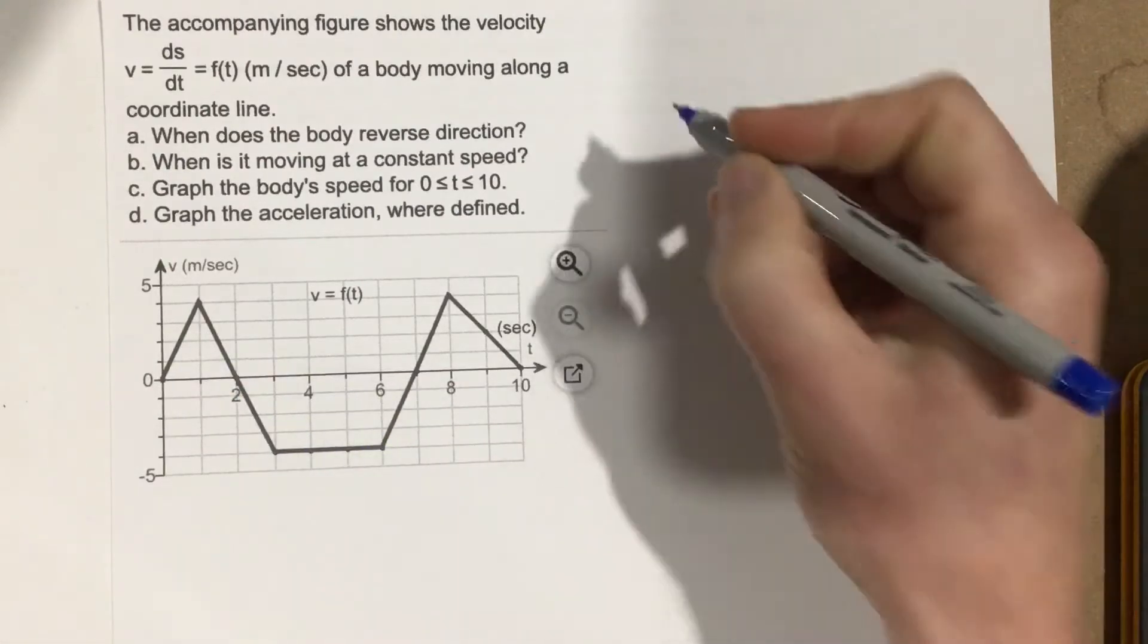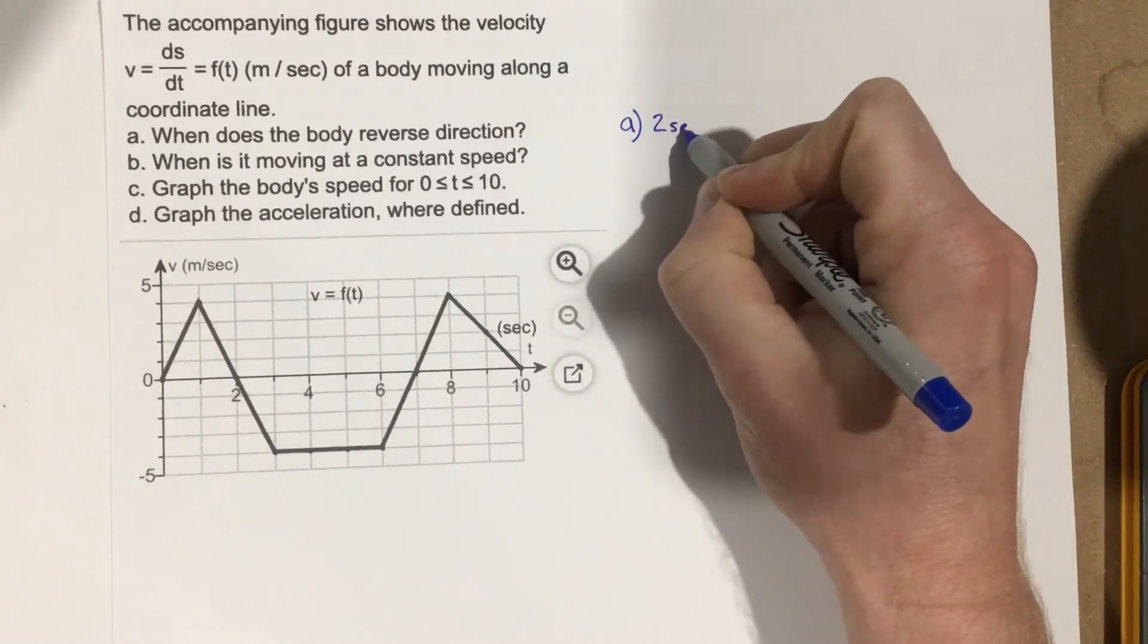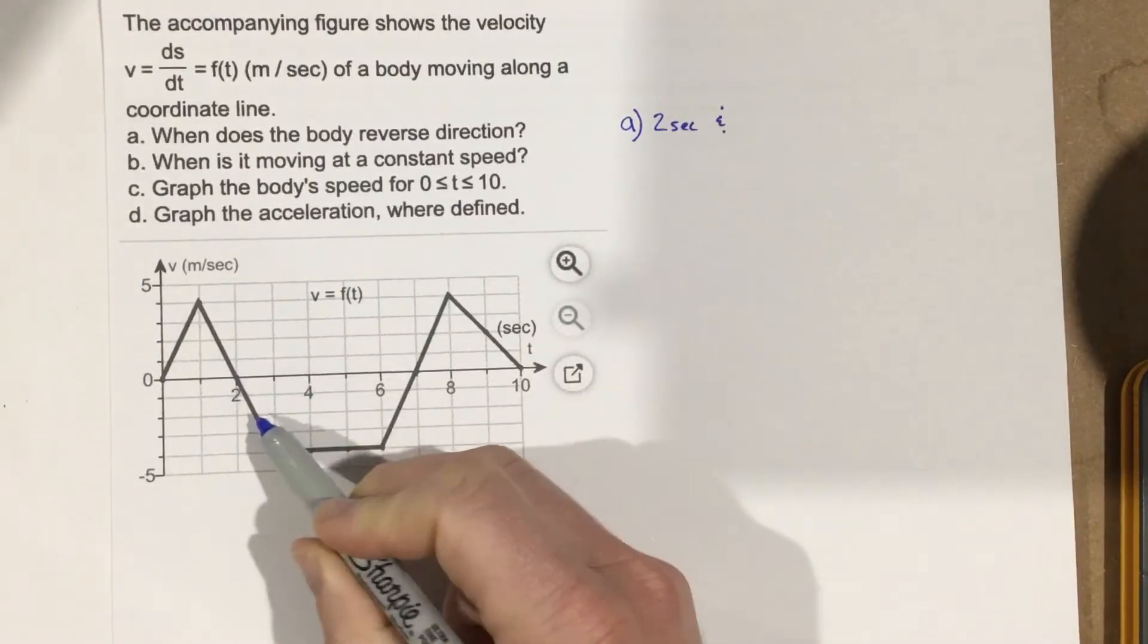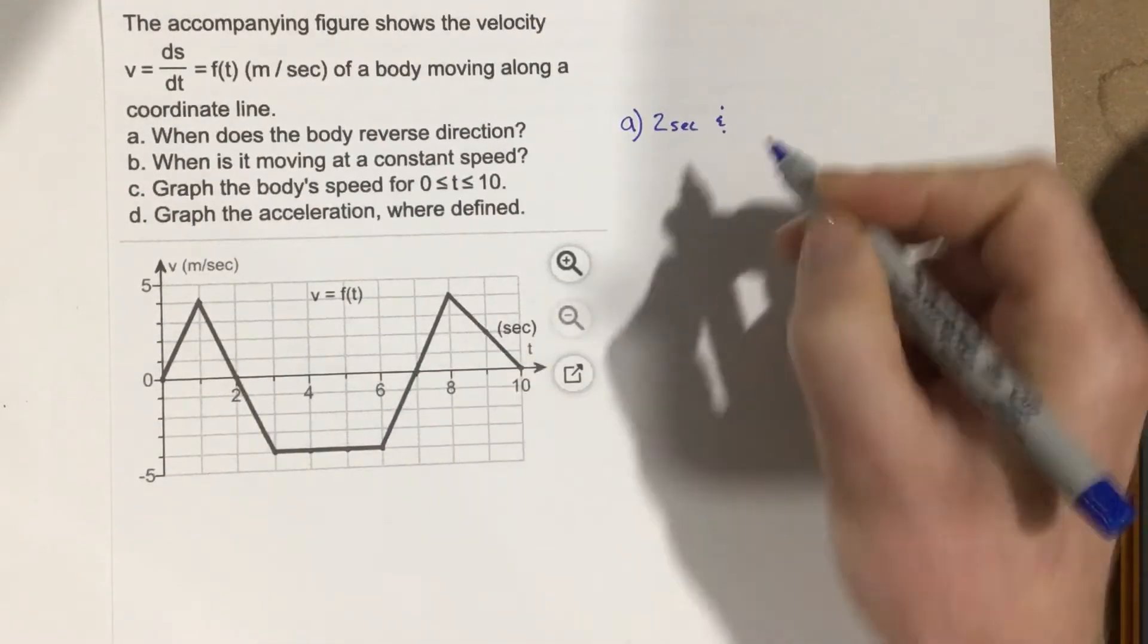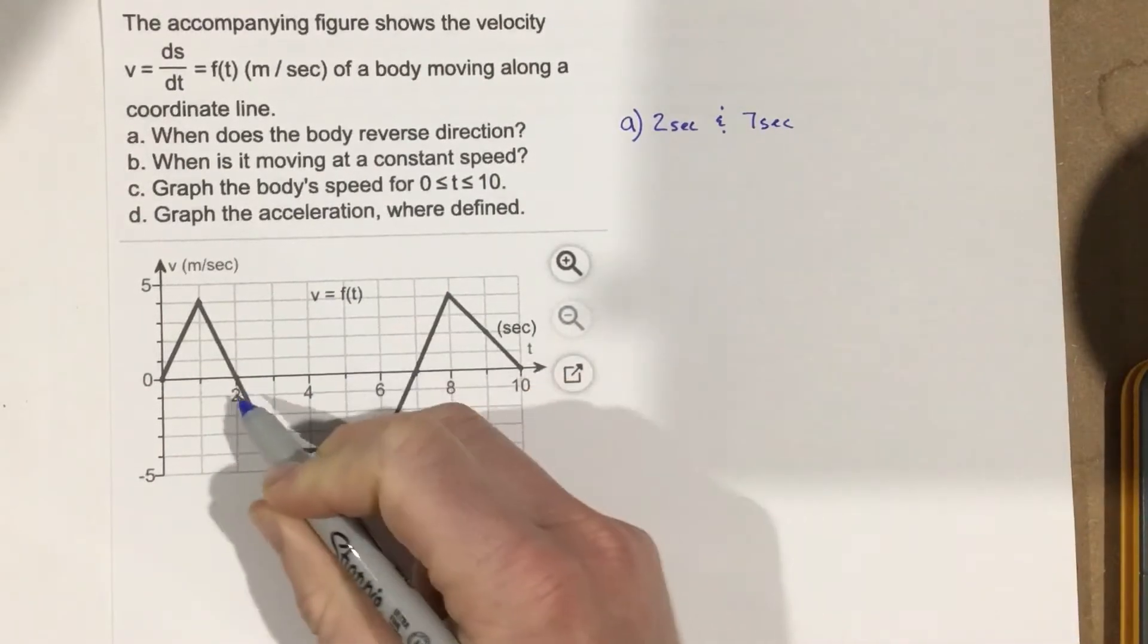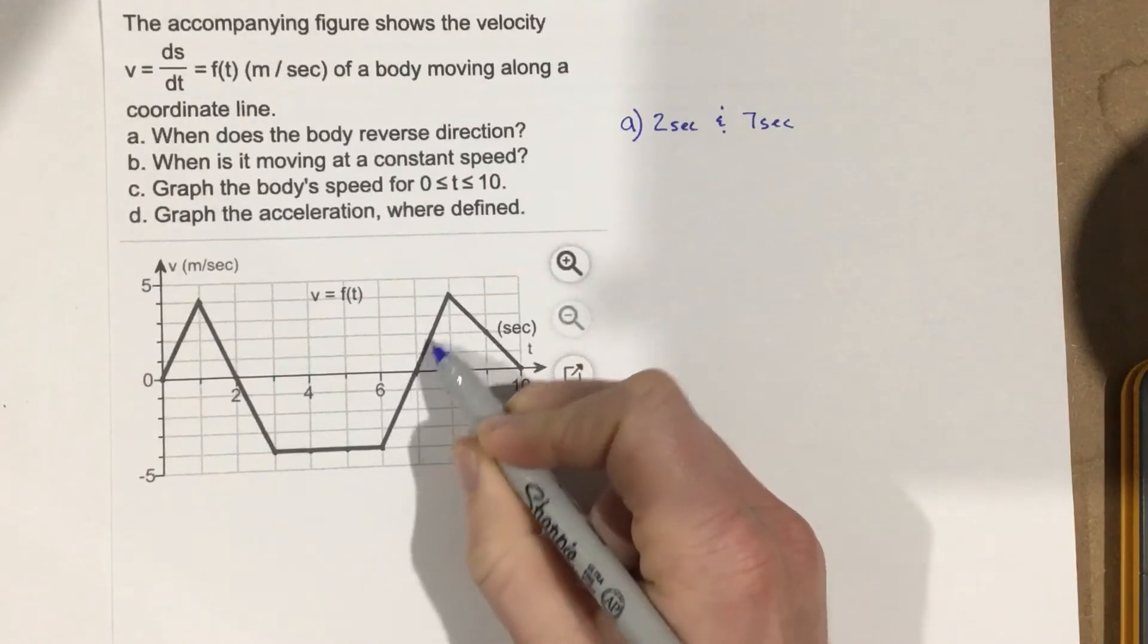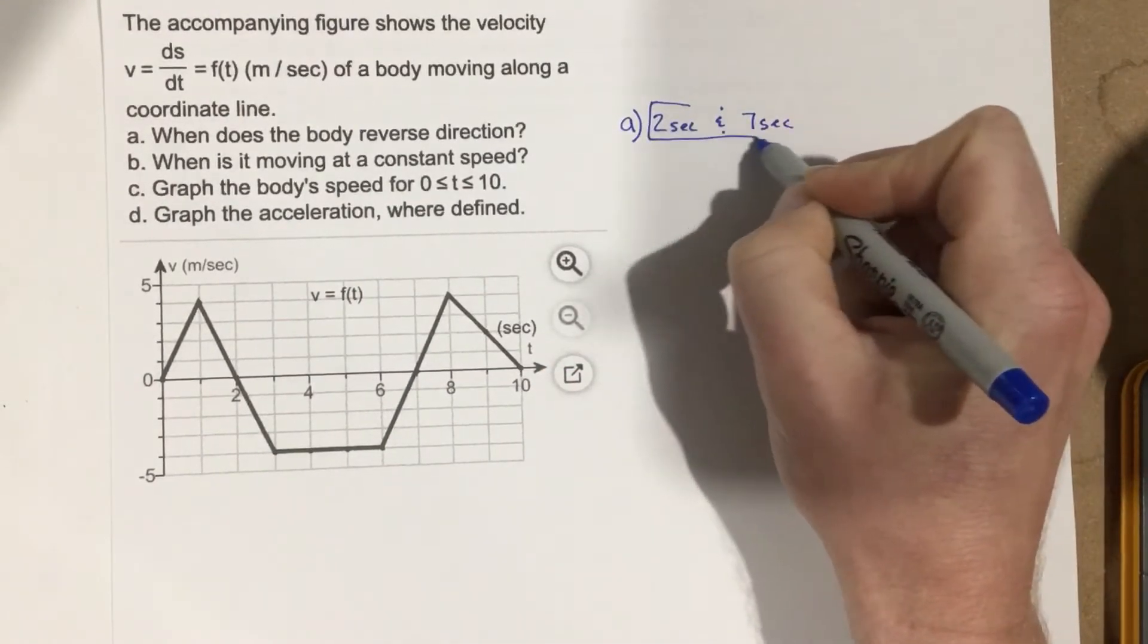So for part a, this happens at two seconds. We're reversing direction here and then now it's going the opposite direction, and then it reverses direction again at seven seconds. So two seconds and seven seconds is when the velocity hits zero and you're going from a negative velocity to a positive velocity, switching direction there. That's part a.